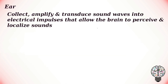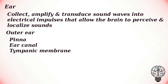Next, the human sense of hearing is attributed to the auditory system. It uses the ear to collect, amplify and the brain to perceive and localize sounds. The ear can be divided into the outer ear, middle ear and inner ear, each of which has a specific function in the process of hearing.